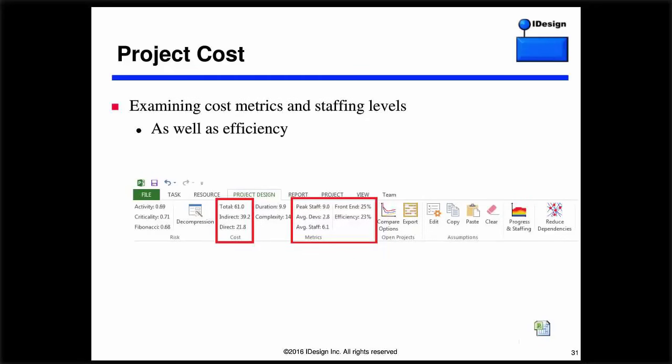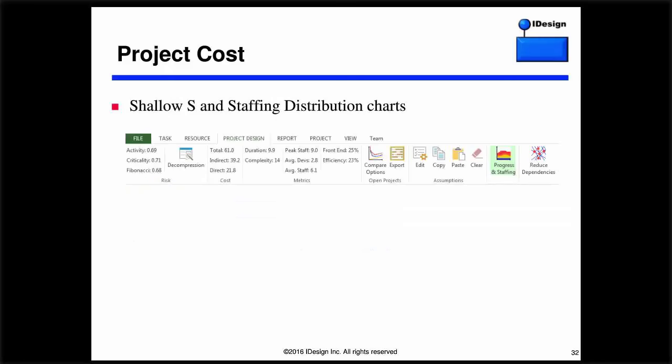Once you're done with this setup, PDX will correctly calculate the project cost. On the project design tab of the ribbon there's a cost group where you see the total cost, indirect cost, and direct cost — very labor intensive to do by hand. You also get to see other metrics: staffing level, because you've now properly accounted for how developers are used between tasks, so you see your peak staffing level, average developer level, and average staffing level. PDX also calculates the efficiency of your design — for example, this project is 23% efficient. Efficiency is the ratio between the value you actually get versus how much you pay for everything.